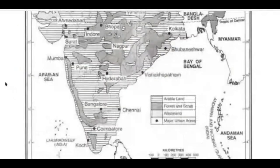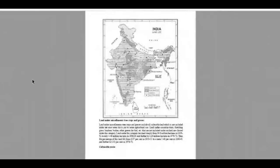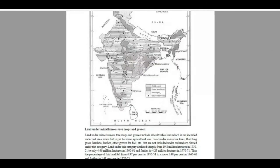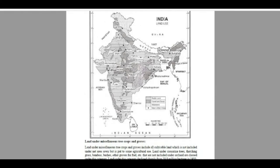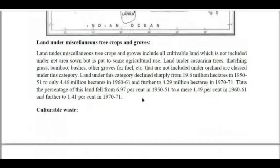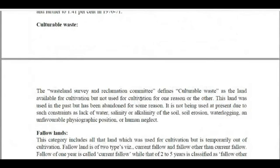Looking at the area map: arable land that can be brought under agriculture is visible in the plains. The Himalayan region is forest land due to the presence of hills. Wasteland is visible in Rajasthan's desert areas and parts of Gujarat and Kolkata. This map shows what is arable land, forest land, and cultivated land.